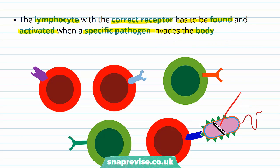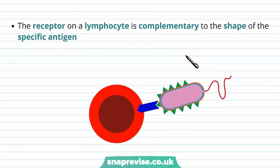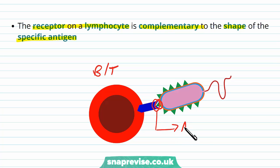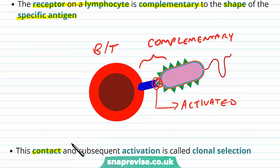When a pathogen invades, it will have antigens of a very specific shape on its body. Eventually there will be a T or B cell with the right receptor that will come along and bind, and when they bind, it will be activated — there may only be one of these floating around the body at a time. The receptor on the lymphocyte is complementary to the shape of the specific antigen, just as an enzyme fits into a specific substrate. This contact between them and the subsequent activation is known as clonal selection.